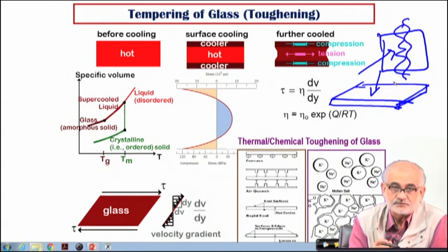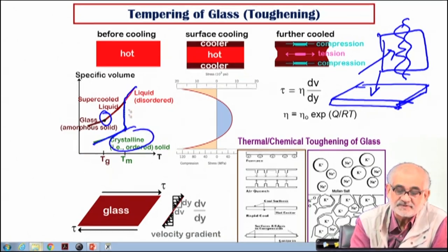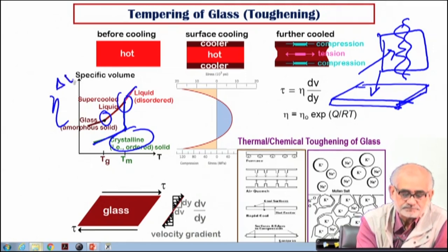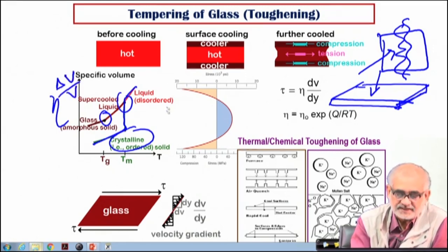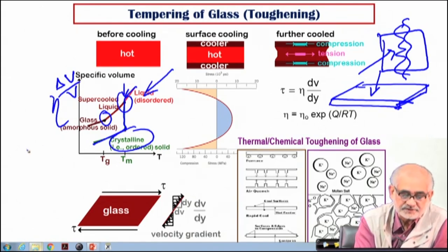First of all we must realize that when we are talking about glass we are talking about a glass transition phenomenon, but we are not expecting any sharp first-order transition that is common of crystalline material. That means there is no fixed melting temperature — only a change in viscosity. We are essentially plotting viscosity or specific volume as a function of temperature.